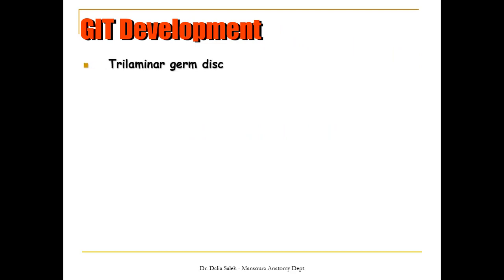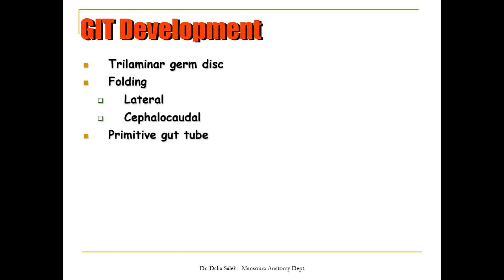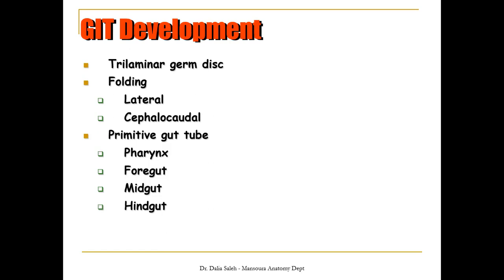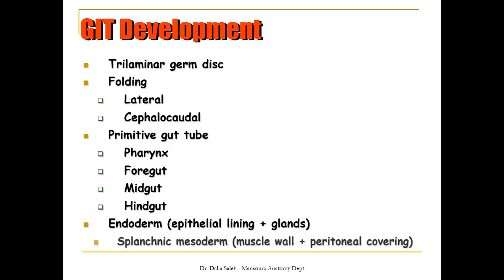To understand the development of the gastrointestinal tract, we need to go back to the third week of development, where the embryo was formed of a trilaminar germ layer. Then in the fourth week of development, there is folding of the embryo both in a lateral direction and in a cephalocaudal direction, thus the primitive gut is formed, consisting of the pharynx, the foregut, the midgut, and the hindgut. The epithelial lining of the gastrointestinal tract and the associated glands are derived from the endoderm, while the muscle coat and its peritoneal covering are derived from the splanchnic layer of mesoderm.